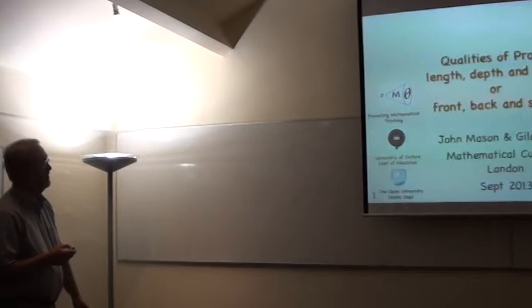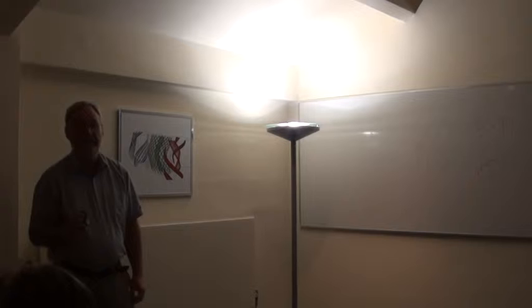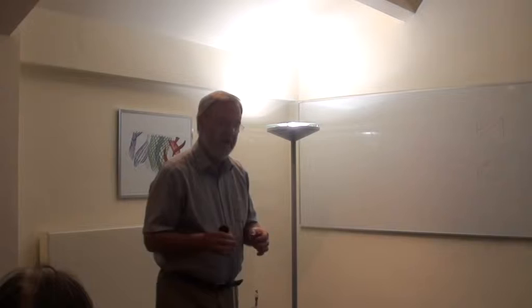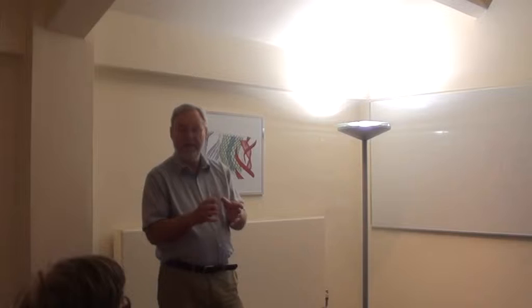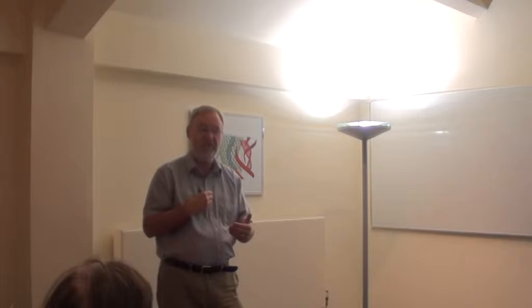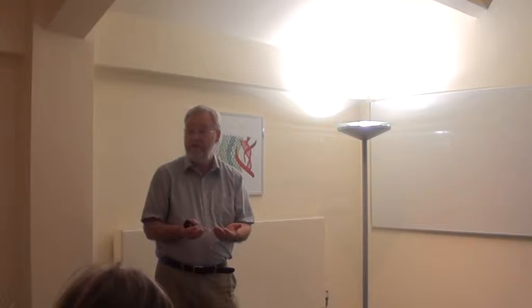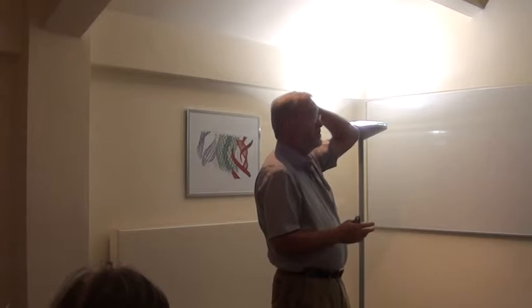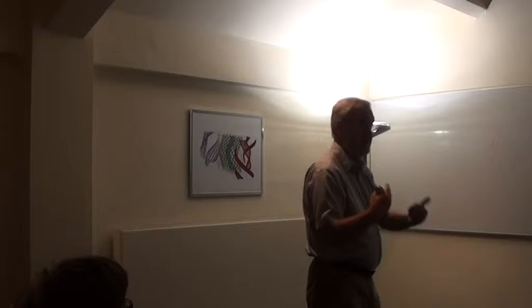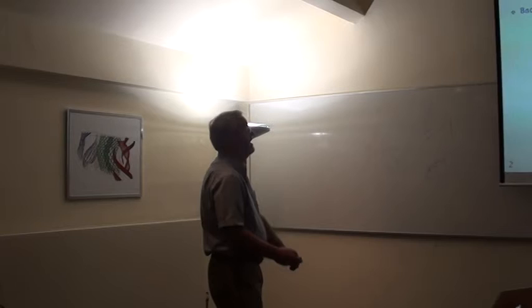Thank you for that setup. I want immediately to disagree with the title that we chose. I've been reminded over and over in this conference that it is so easy to slide between an adjective attributing a quality to an object, rather than recognizing that it's actually a relationship between the valuer and the object that is being described. So it isn't really qualities of proof. The best I could come up with was qualities attributed to proof, but they're qualities which we can then attribute to the sensitivities of the individual.